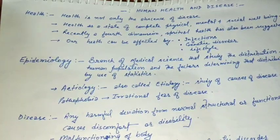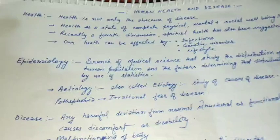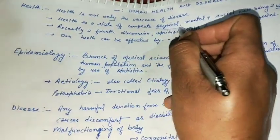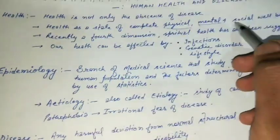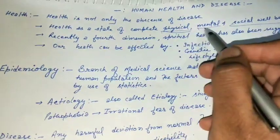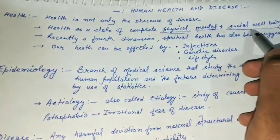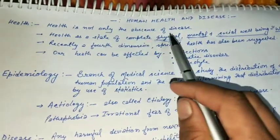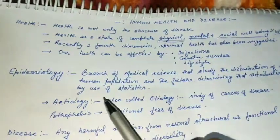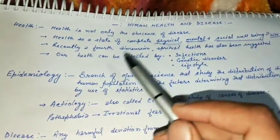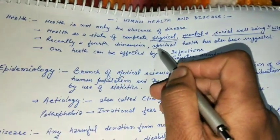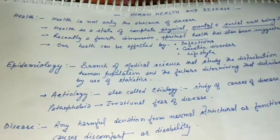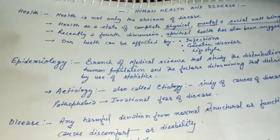According to WHO's definition, what is health? Health is a state of complete physical, mental, and social well-being. These are the 3 main dimensions related to health. Health means being physically fit, mentally fit, and socially fit. Recently, a 4th dimension has also been added, which is called spiritual health. So if we talk about a healthy person, it means the person is physically, mentally, socially, and spiritually healthy and fit.